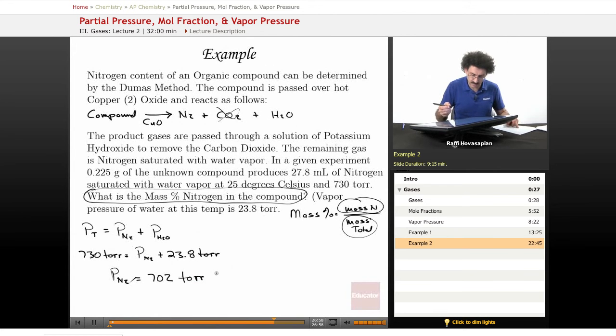Wait, is that correct? 730 minus, no, that's not correct. That's not 702 torr. Let me see. Let's do some quick arithmetic. Arithmetic has never been my strong suit. 30, 23.8, that's going to be 706, I think, 0.2. 702, okay, torr, excellent.